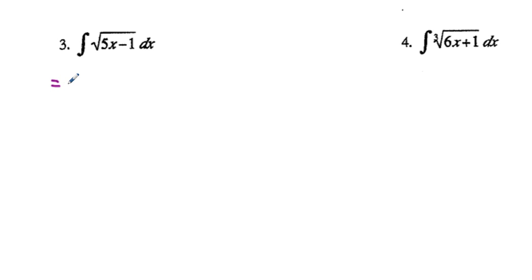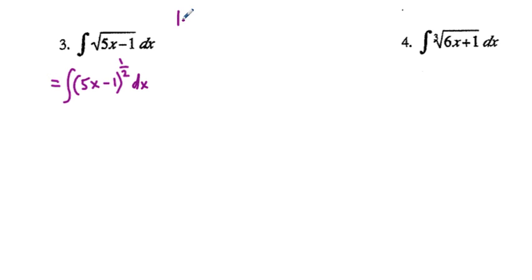In problem 3, we can rewrite this integral as the integral of the quantity (5x minus 1) to the one-half power in rational exponent form, dx. We're going to assign u. If we let u equal 5x minus 1, then differentiating both sides we have du equal to 5 dx.